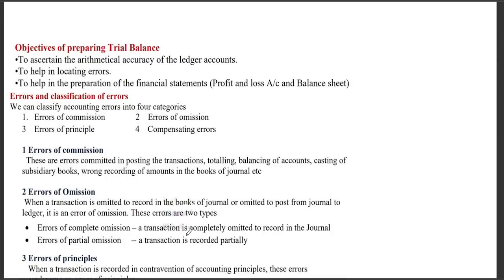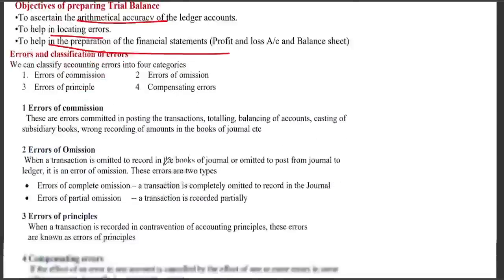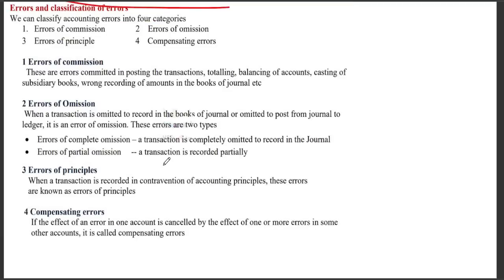We need to prepare a trial balance to check the mathematical accuracy of ledger accounts, locate errors, and prepare financial statements. There are four types of errors: errors of commission, errors of omission, errors of principle, and compensating errors. Errors of commission occur when a transaction is posted to the wrong account, or there is an error in totaling or recording the amount.